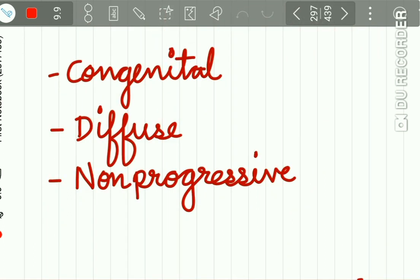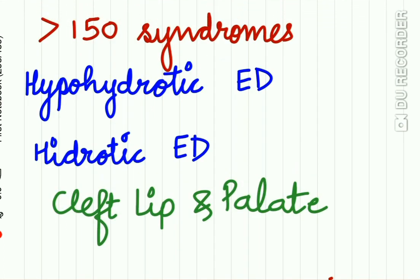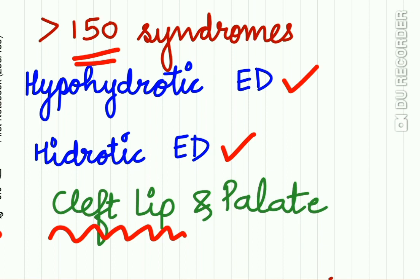The current classification of ectodermal dysplasia is based on clinical features and includes congenital ectodermal dysplasia, diffuse ectodermal dysplasia, and non-progressive ectodermal dysplasia. This group is made up of more than 150 syndromes. We will study hypohydrotic ectodermal dysplasia and hydrotic ectodermal dysplasia in detail. Also remember that ectodermal dysplasia is frequently associated with mid-facial defects, mainly cleft lip and cleft palate.